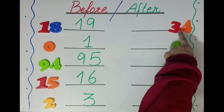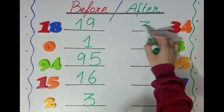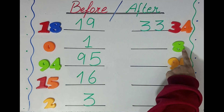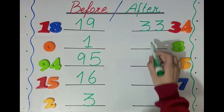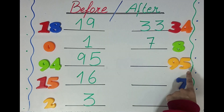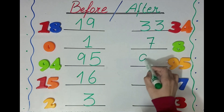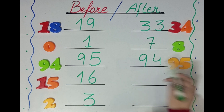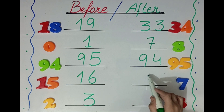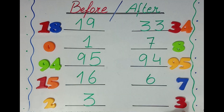So, what comes before 30? 29. What comes before 8? 7. What comes before 95? 94. Yay! What comes before 7? 6. What comes before 3? 2. Yay!